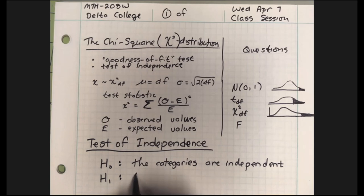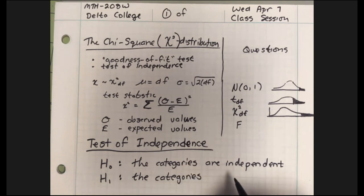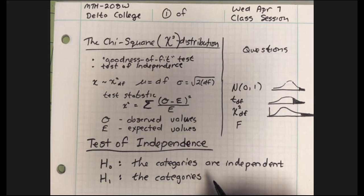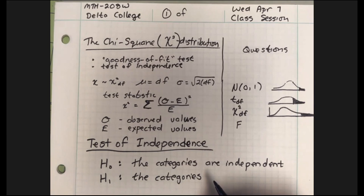The alternative hypothesis would be that the categories are dependent, or not independent. The kind of car you drive depends on your age — I could easily believe that. Older people tend to drive more comfortable, more expensive cars, maybe like a Cadillac, a Lincoln, a Buick. Younger people might have a sports coupe, a Ford Focus, maybe a Mazda Miata if you're lucky.